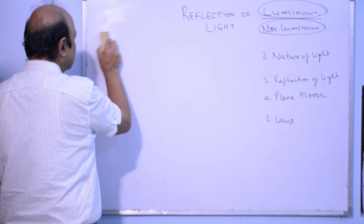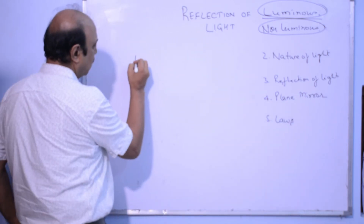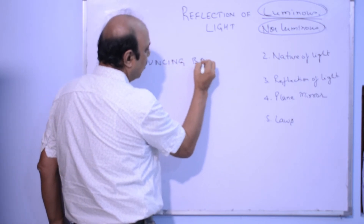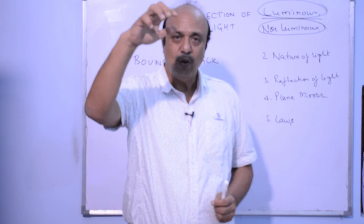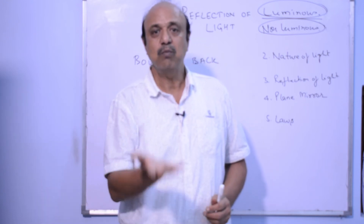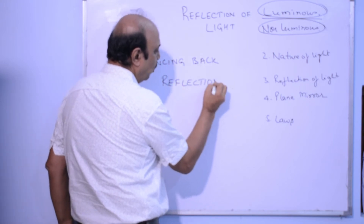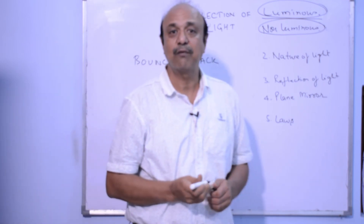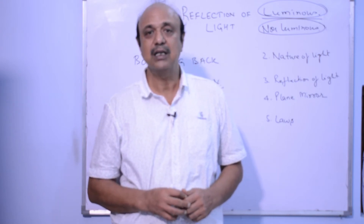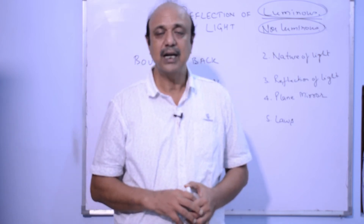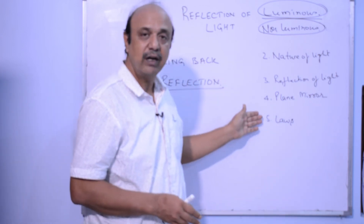So we have understood the two theories associated with light. Now, how does light get reflected — what is reflection of light? Reflection of light is nothing but the bouncing back of light. This reflection depends on the surface from which it is bouncing back. If that surface is well-polished, the bouncing back is along a particular path. If it is a rough surface, then the light is scattered all over. How that path is determined, we will discuss when we cover the laws of reflection.